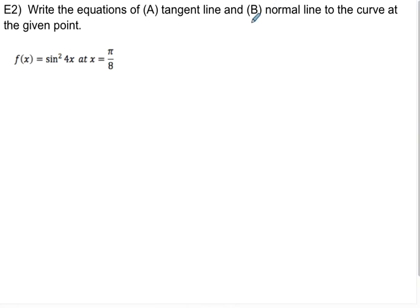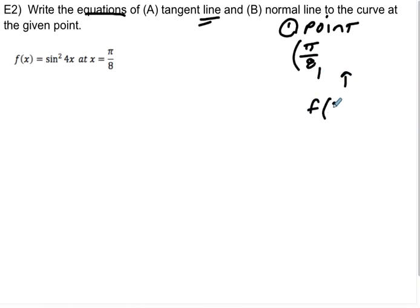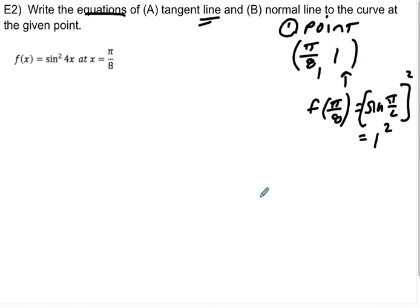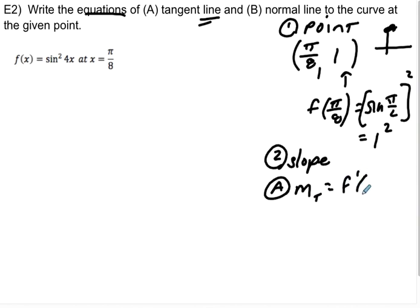For E2, we write tangent and normal lines to the curve at the given point. To find the equation of a line, we need a point and a slope. The point is pi over 8 comma f of pi over 8. Plugging in gives sine of pi over 2, quantity squared, which is 1 squared equals 1. So the point is pi over 8 comma 1. The tangent slope is f prime evaluated at that point, and the normal slope is the opposite reciprocal of that.